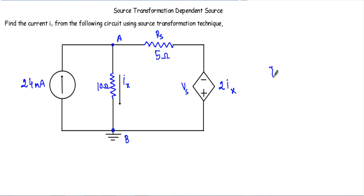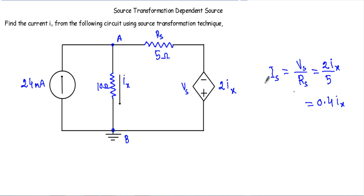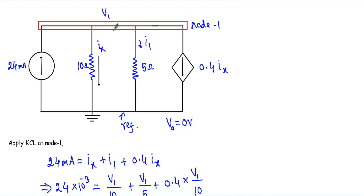I can replace the voltage source in series with Rs with a current source in parallel with a resistor of the same value. The current source Is = Vs / Rs = 2ix / 5 = 0.4ix. Since the dependent source must supply current in the downward direction, the current source direction will be downward. After replacing, I get a circuit with current source 0.4ix and parallel resistance of 5 ohm between terminals a and b.